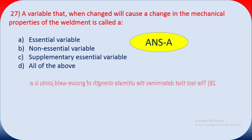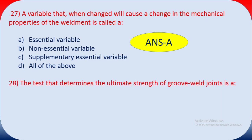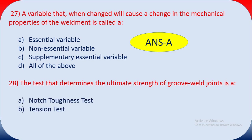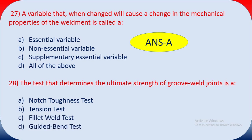Question twenty-eight: the test that determines the ultimate strength of the groove joint is which test? It should relate to tensile strength. There is some confusion — both the tensile test and the nick-break test can give ultimate strength values for groove joints. The answer is A — the nick-break test.